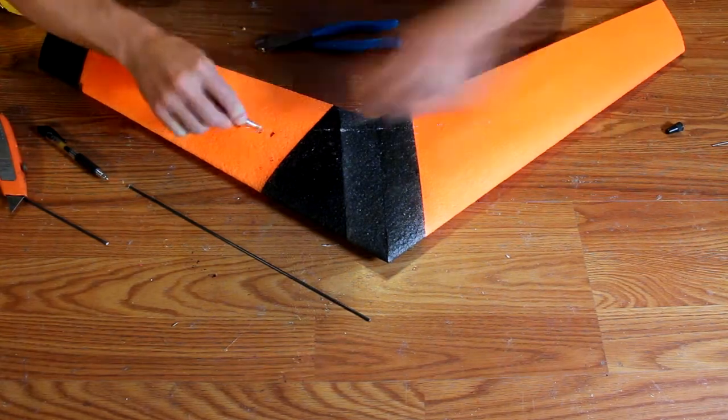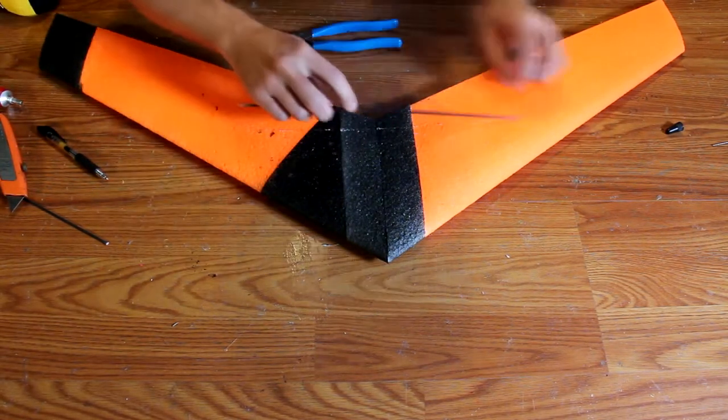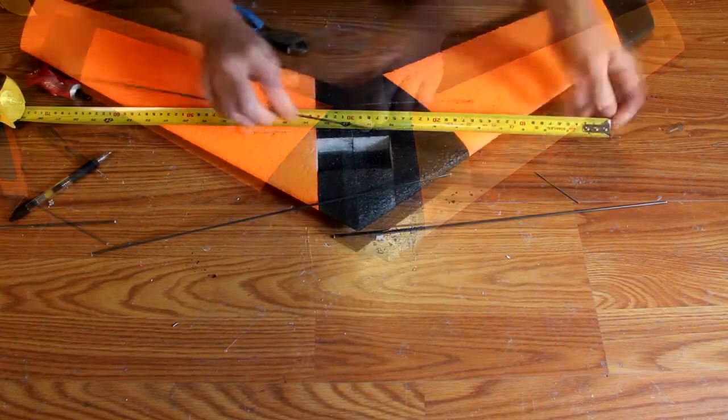Again, don't cut all the way through the airplane. You only want to go about an eighth inch deep. Embed your glue and then embed your spar.